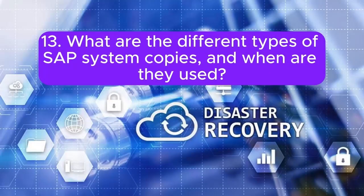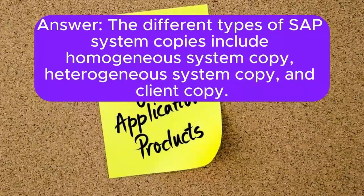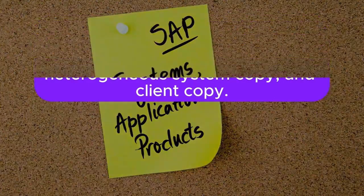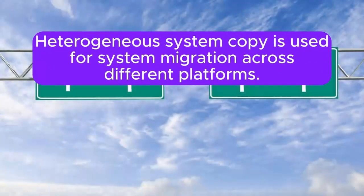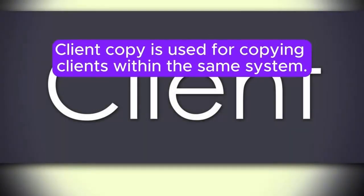Question 13: What are the different types of SAP system copies and when are they used? The types include homogeneous system copy, heterogeneous system copy, and client copy. Homogeneous system copy is used for system refresh and migration within the same platform. Heterogeneous system copy is used for migration across different platforms. Client copy is used for copying clients within the same system.